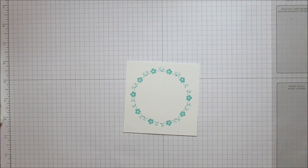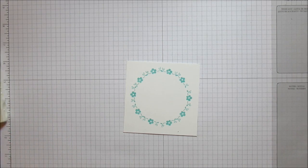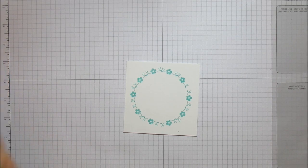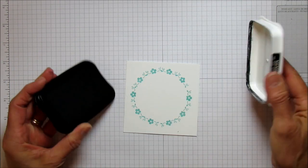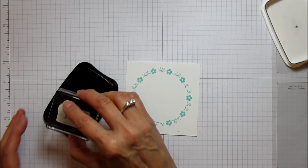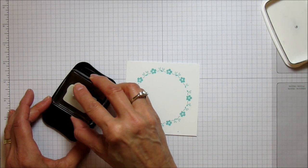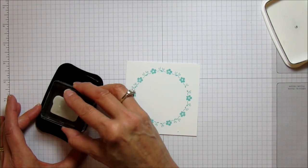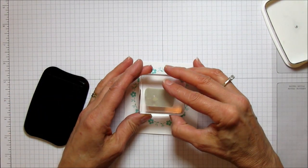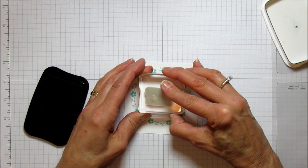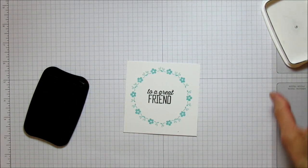Instead of the Coastal Cabana, I like the black, so I'm going to use Memento black ink on this. I'm going to stamp 'to a great friend,' and I'll just center that. Hopefully I have it centered because I can't get over the top, but that looks pretty good.